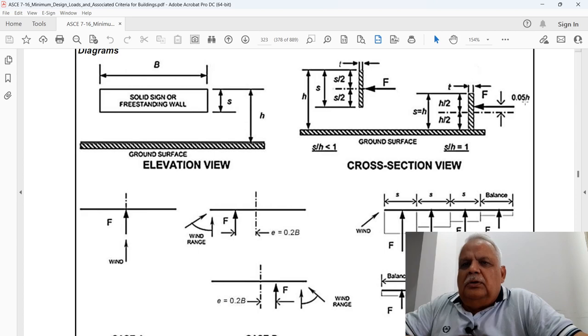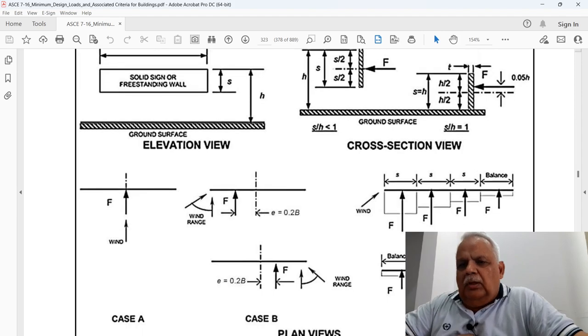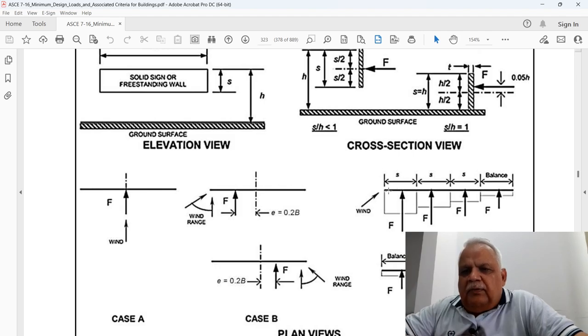Case B is the same thing, the same force, but we have to consider an eccentricity which is 20 percent of the width of the billboard.